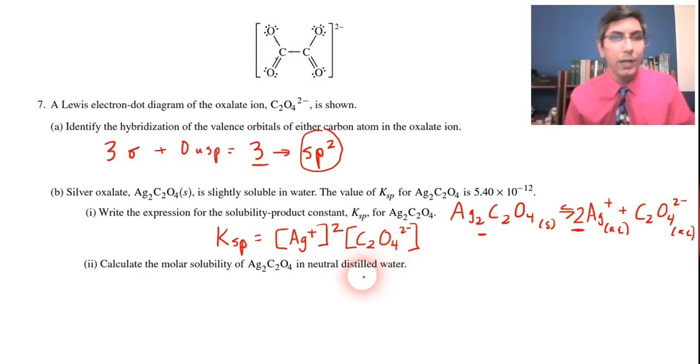Now part two asks you to calculate the molar solubility of silver oxalate in neutral distilled water. Like I've shown in my videos here, silver oxalate, we don't know what the molar solubility is, let's call that x. And if that's the molarity of the silver oxalate in solution, your silver ion is 2x, there's a two right there, that mole ratio is a two to one. Oxalate is just a one x.